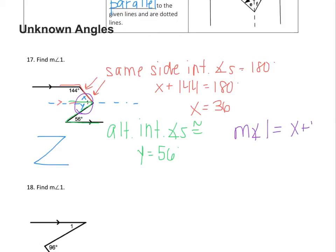So I have X plus Y gives us the measure of angle 1. 36 plus 56 gives us the measure of angle 1. So then the measure of angle 1 is 92.